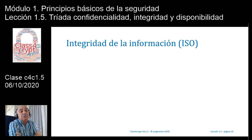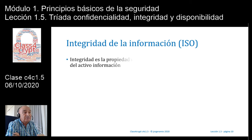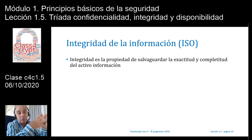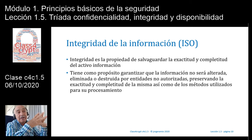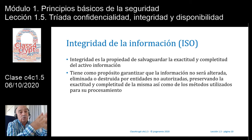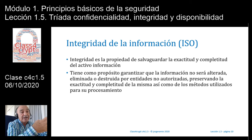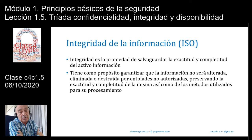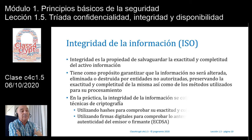Otro principio básico de la seguridad de la información es la integridad. Y decimos que integridad, también siguiendo la ISO, es la propiedad de salvaguardar la exactitud y completitud del activo de información. Por lo tanto, tiene como propósito garantizar que la información no será alterada, eliminada o destruida por entidades no autorizadas, preservando así la exactitud y completitud de la misma, como también los métodos utilizados para su procesamiento. Es decir, nadie excepto los usuarios responsables de esa información, que tienen ciertos privilegios de generar, modificar, alterar e incluso destruir la información, mediante un control de acceso y un conjunto de privilegios.